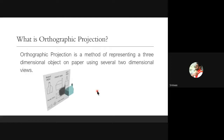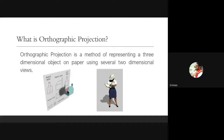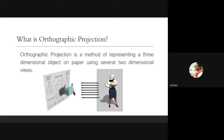For orthographic projection we need to follow a method. We need to keep the object, observer, and plane of projection in line — the observer sees the object, and the plane of projection is behind the object. All the projection rays should be parallel to each other and perpendicular to the plane of projection. Then we will get the shadow of the object on the plane and get the information from it.